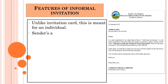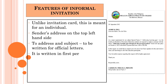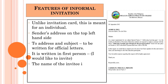The sender's address is mentioned on the top left-hand corner. Next, the date of writing the letter is supposed to be written. Remember, if it is an official invitation, then you can mention two addresses along with the subject. But if it is a friendly invitation, you don't have to write two addresses and the subject. The name of the invitee could be mentioned in the salutation.